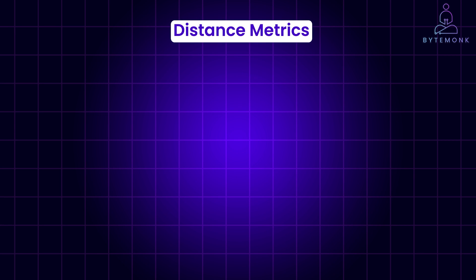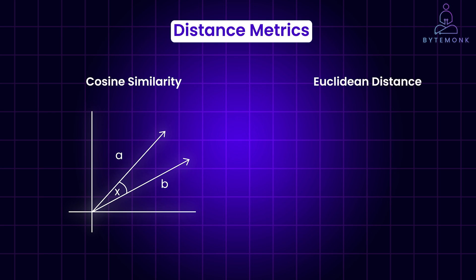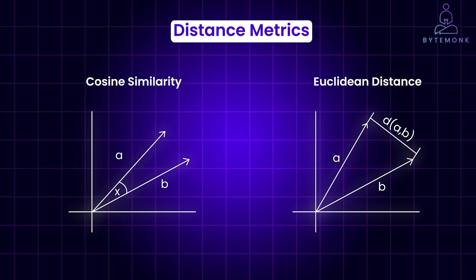Distance metrics are mathematical functions used to measure the similarity between vectors. The choice of distance metric depends on the type of data and the desired notion of similarity. For example, cosine similarity is often used for text and embeddings, measuring the angle between vectors. And Euclidean distance is common for numerical data, measuring the straight-line distance between vectors.